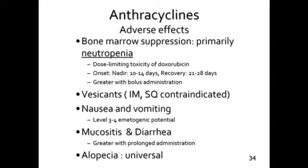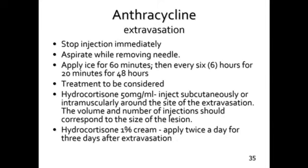Other adverse effects include bone marrow suppression — primarily neutropenia. These agents are vesicants. Nausea and vomiting is highly emetogenic, requiring a 3 or 4 drug antiemetic regimen. Mucositis and diarrhea also occur, and alopecia is pretty much universal.